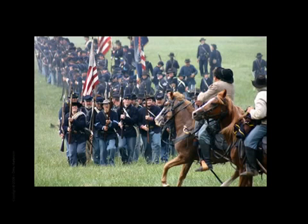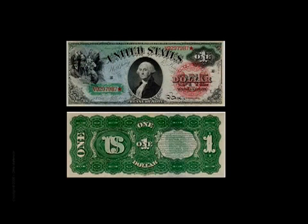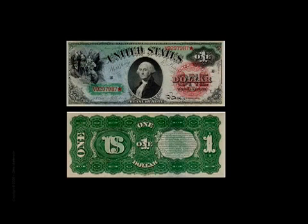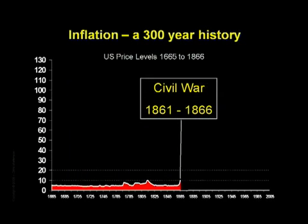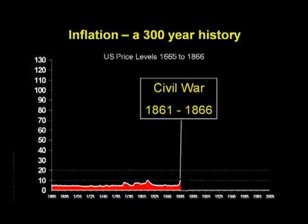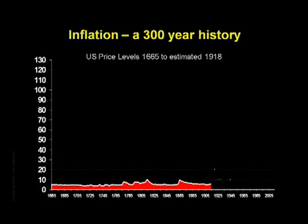To finance the war, the North had to resort to printing a type of currency that still lends its name to our own currency today — of course, back then, it really did have a green back. Again, we see a rapid rise of inflation as a direct consequence of war, and again a return to baseline after the crisis is over. We are now 250 years into this story, and the cost of living is still roughly the same as it was at the start.